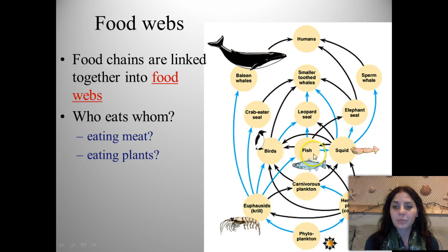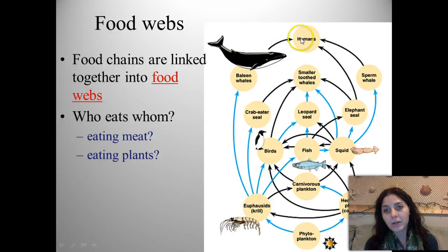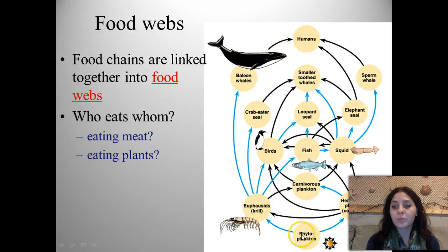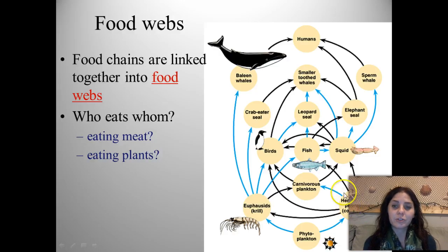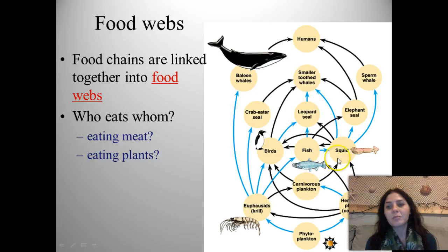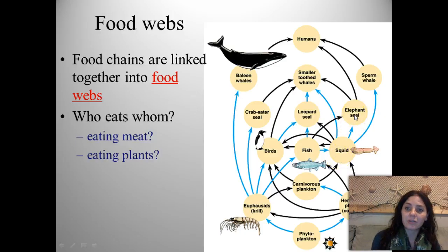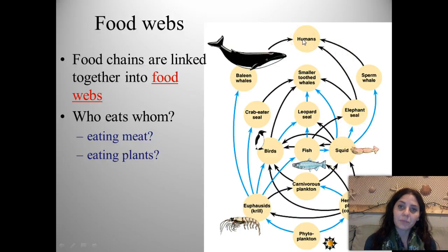For example, starting with phytoplankton: it could be eaten by krill, which could be eaten by a baleen whale, which could be eaten by a human. Another food chain would be phytoplankton, eaten by herbivorous plankton, eaten by carnivorous plankton, eaten by a squid, eaten by an elephant seal, which is eaten by a human.